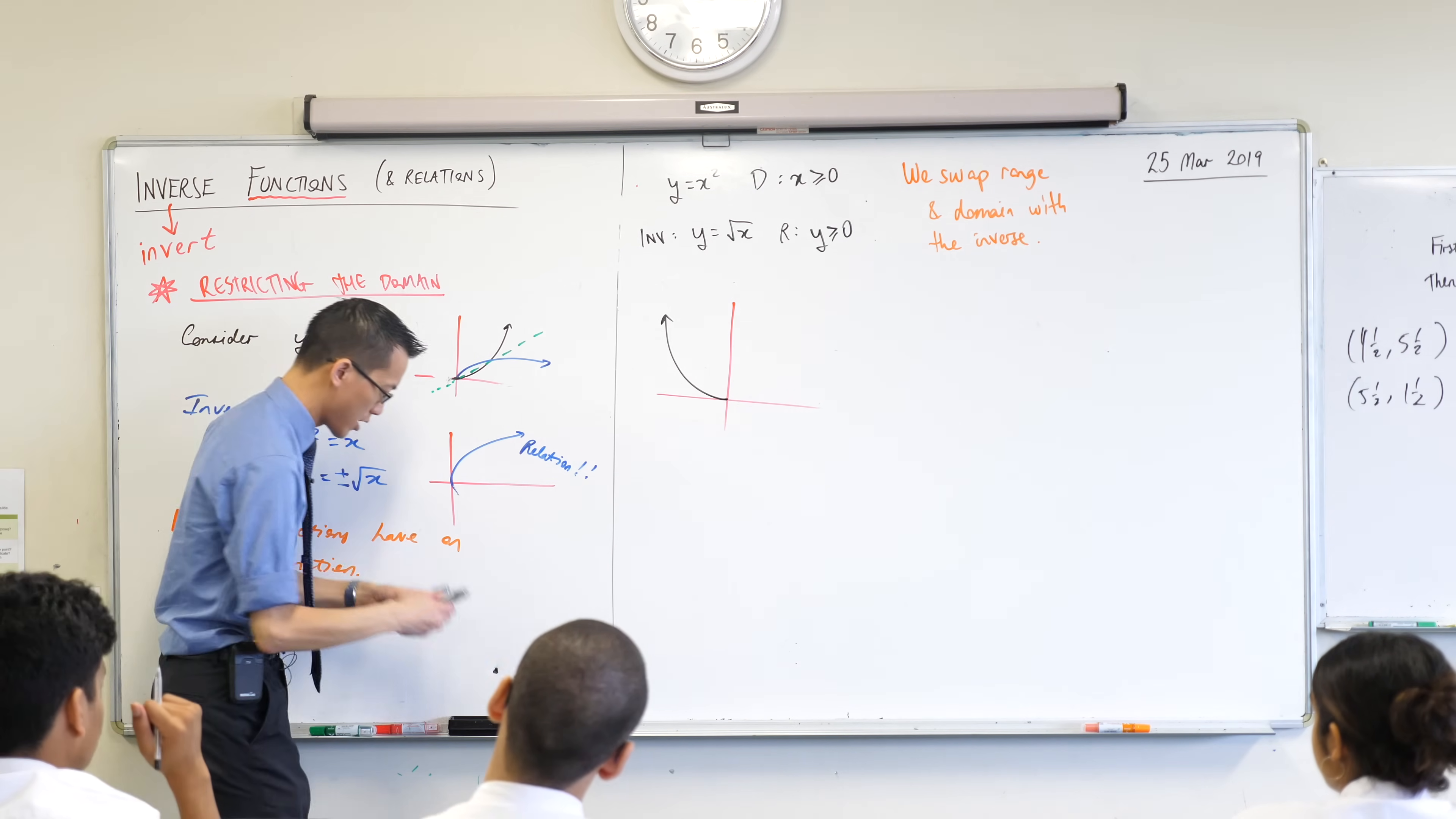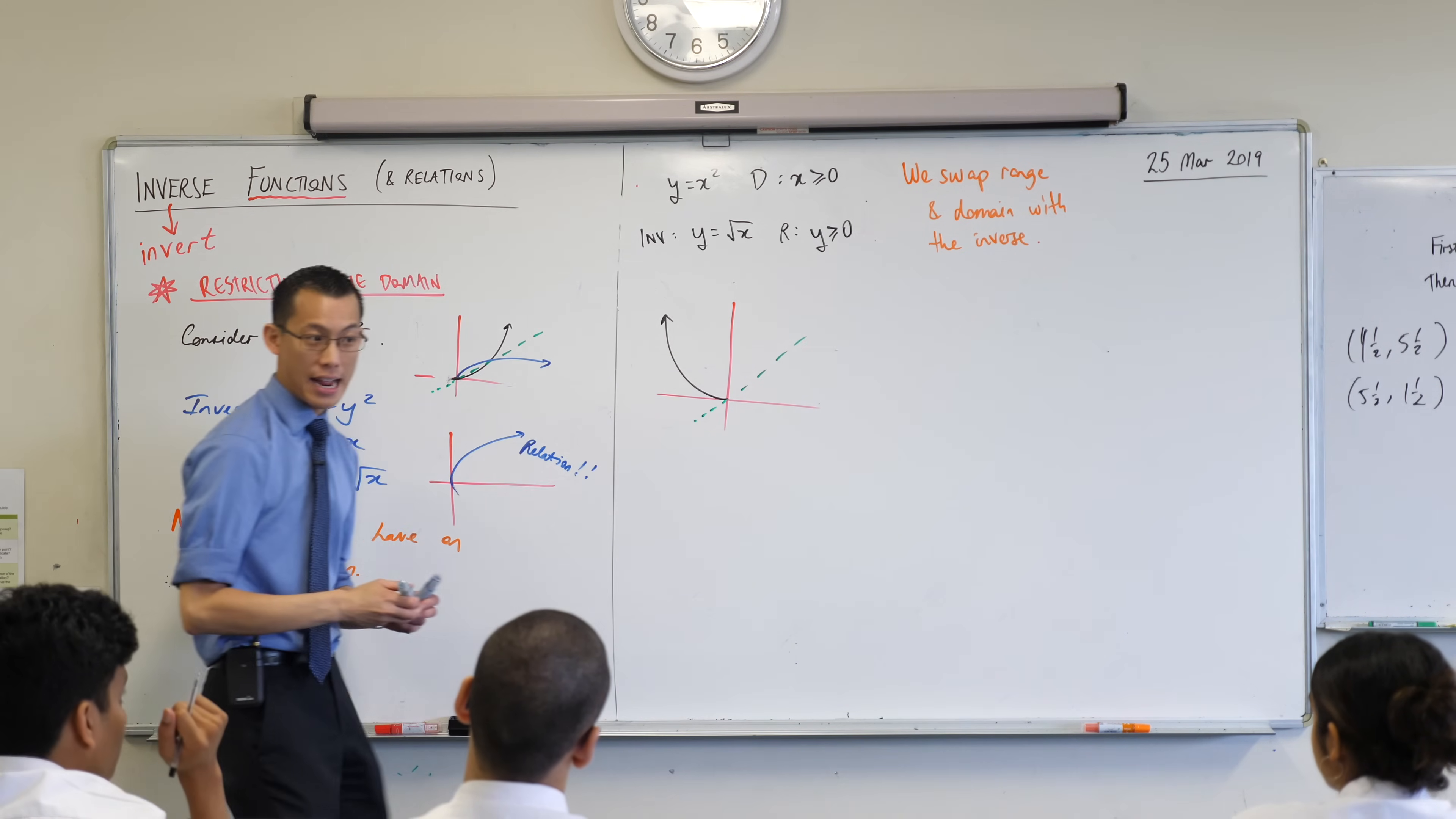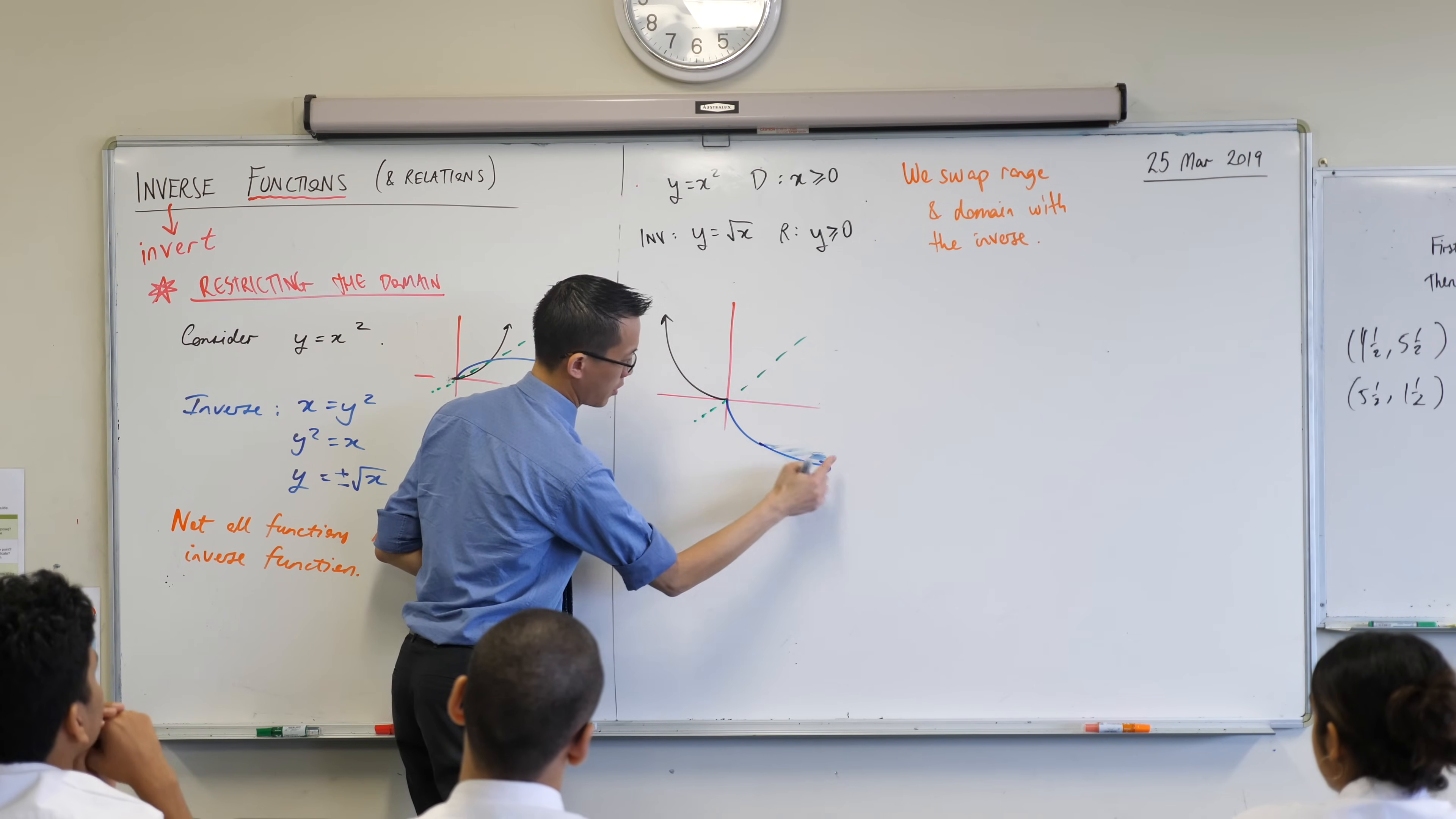Now, you can take that and, just like before, you can put on y equals x and you can reflect it across. You will get this shape over here. Yeah, that's sort of too far. Sorry, there we go.